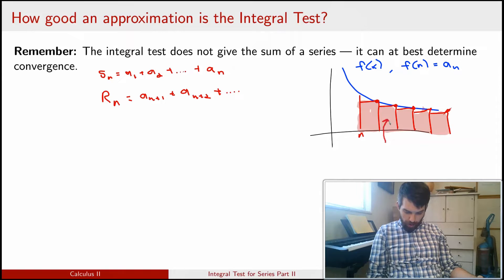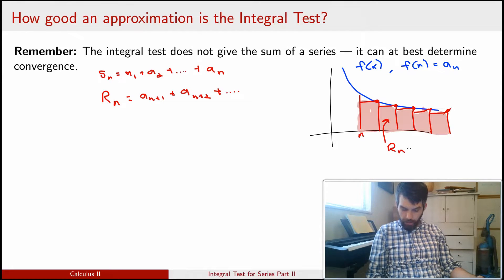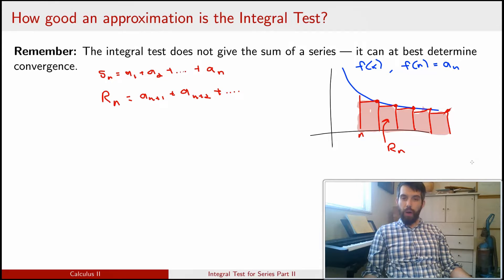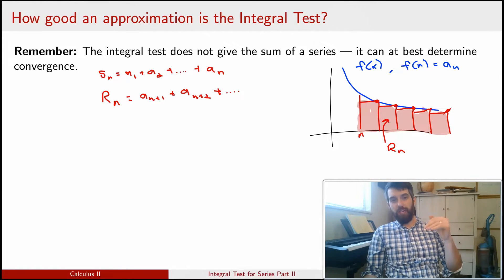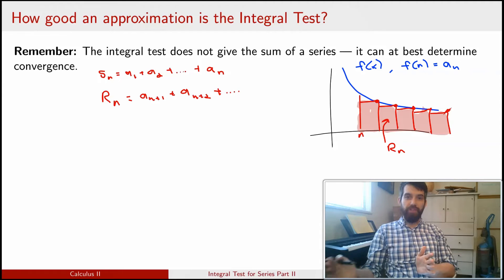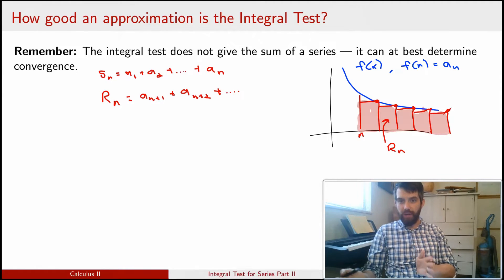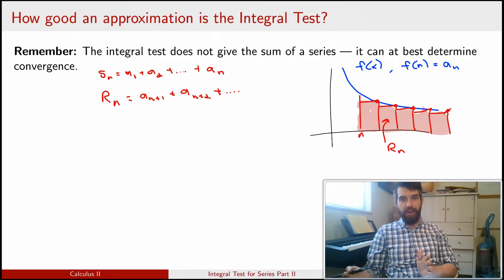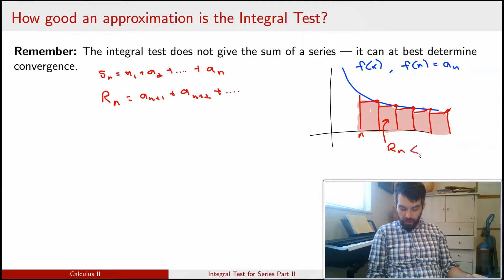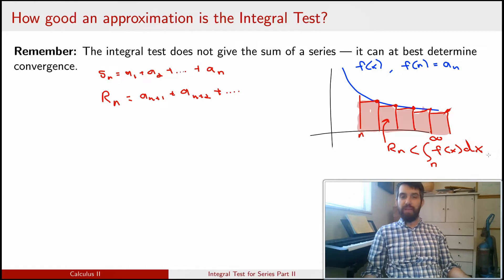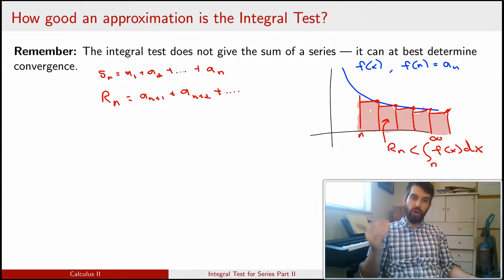In other words, this part under here, these areas of the rectangles, this is going to be my Rn. What I can observe is that because my function is positive, it is decreasing, and it is continuous, this right approximation that I've done, the sum of these rectangles, in other words, the remainder, this is strictly less than the area under the curve. This Rn that I've computed, whatever the value is, it is less than the integral from n up to infinity of f(x) dx. I've been able to give myself a bound on this remainder term.